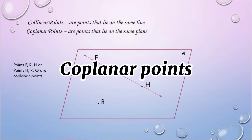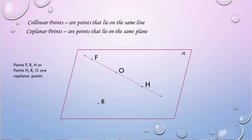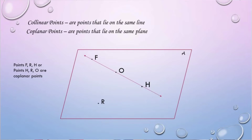Coplanar points are points that lie on the same plane. Points F, O, and H cannot be coplanar points because they lie on the same line. Coplanar points are points F, R, and H, or points H, R, and O. They are the coplanar points.